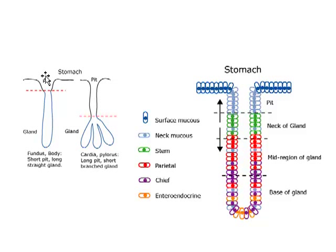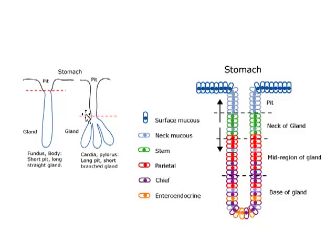Gastric pits are tubular openings into which the contents of gastric glands are secreted. Depending on what part of the stomach we're looking at, the pits may be either short or long. Where the pits are short, the glands which open into them are generally long and simple tubular. Where the pits are long, the glands are generally short and complex and branched in structure. The generalized structure of a gastric gland is as follows.